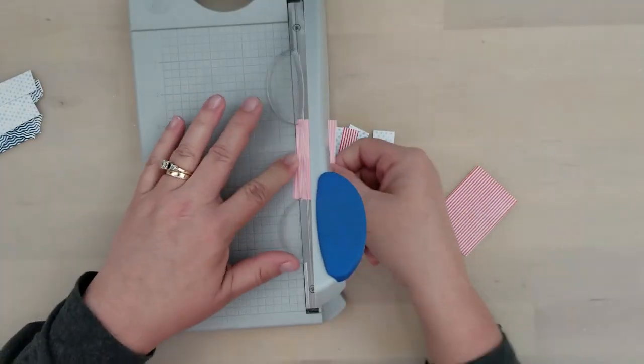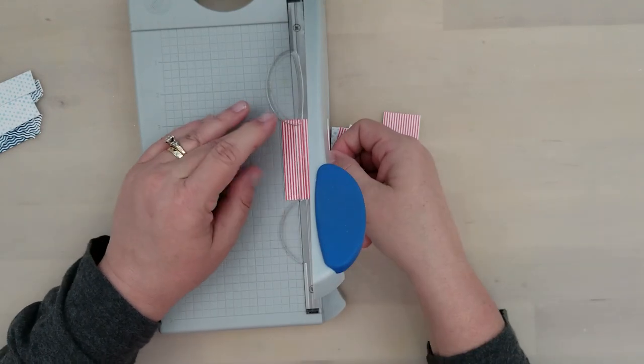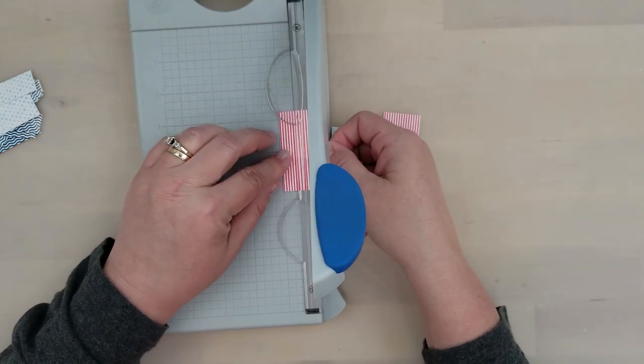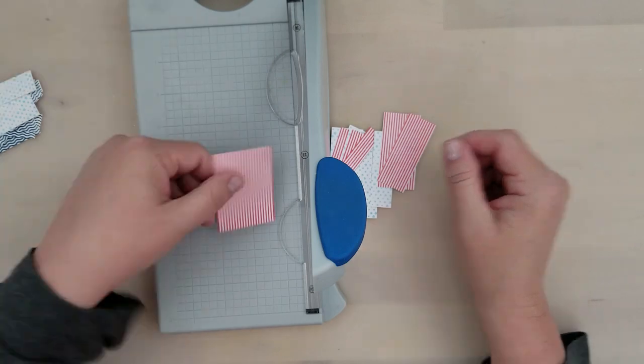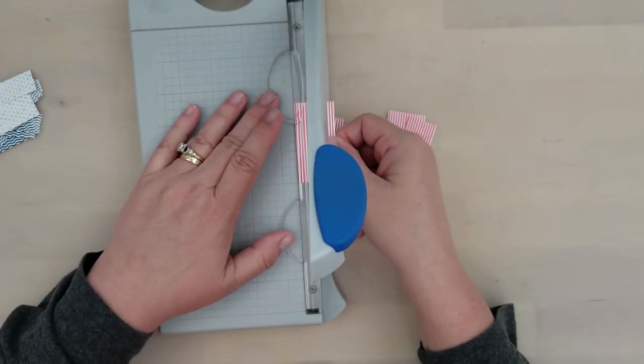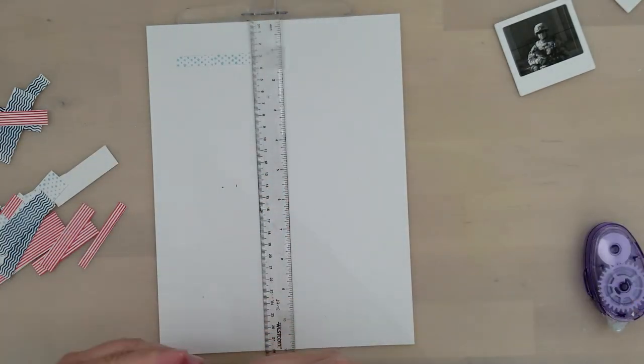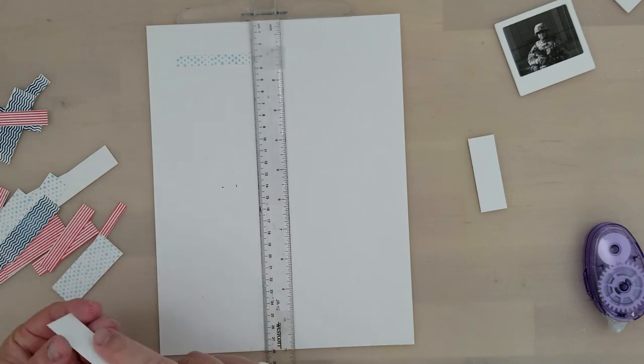Now that I'm done stamping the patterns, I'm taking them to my paper trimmer. First I want to trim away the excess from around each of these patterns, then I'll cut each pattern into two or three strips. Now the width doesn't matter so much for the scrapbook layout. I think a few different sizes looks best for this layout.